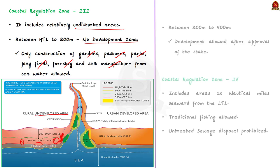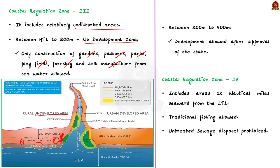The second subdivision of CRZ 3 is the area between 200 meters and 500 meters landward of the high tide line. In this zone, development of vacant plots for construction is allowed only after prior approval of the states. That is all about CRZ 3.